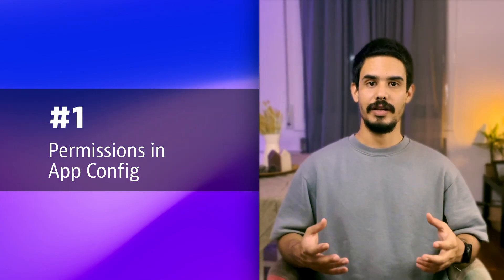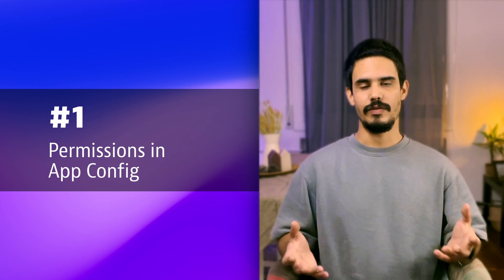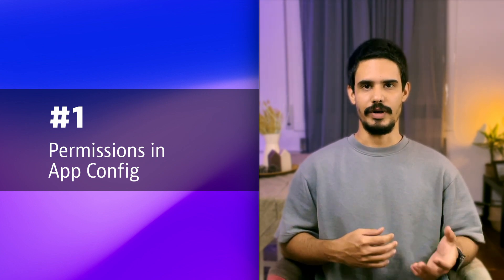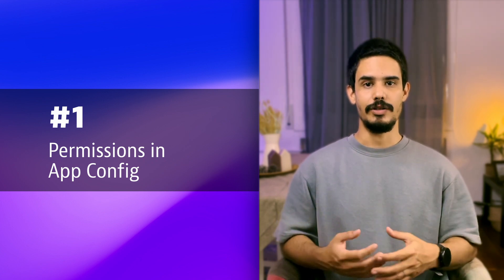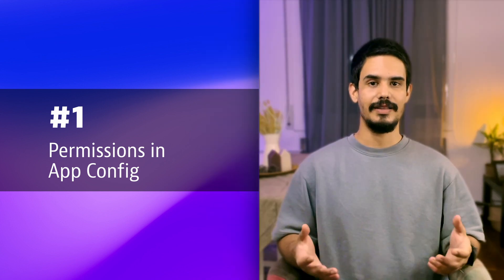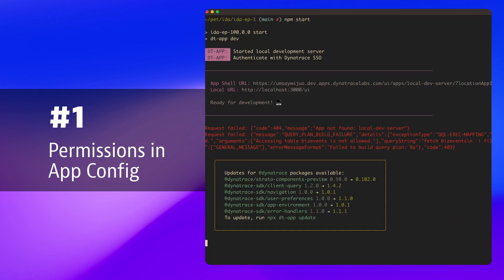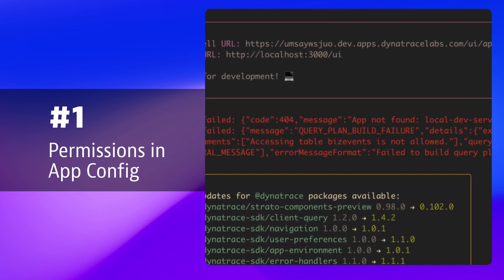So you've just created your first Dynatrace app project and you want to show some visualizations with data coming from Grail. You play around with DQL in notebooks and you're happy with your query. Back in the app, you use the Query Execution client to execute your DQL query and you get an error. If you carefully read the error message, you'll see that accessing table BIS events is not allowed.